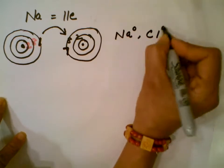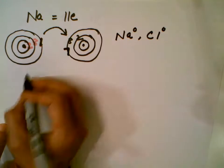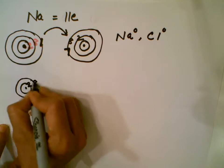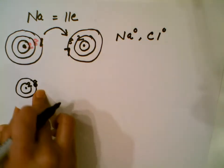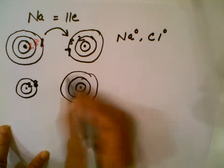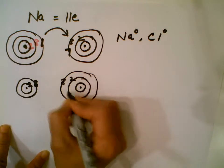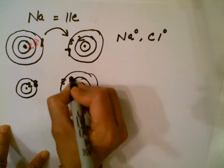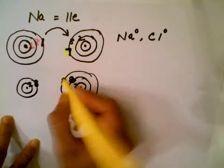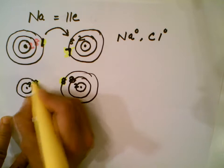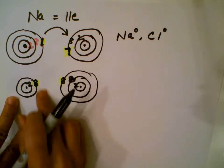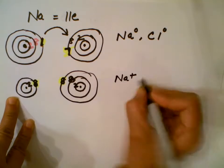Once the sodium atom loses one electron, it is left with only 10 electrons: 2, 8 — with the outermost shell complete. Chlorine, which was 2, 8, 7, now becomes 2, 8, 8 — its outermost shell is now complete as well. Since sodium's outermost electron is gone, we no longer even need to show that outer shell. This is now the sodium ion and the chloride ion, making the compound sodium chloride.